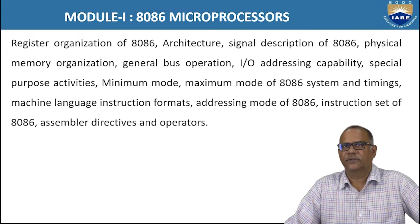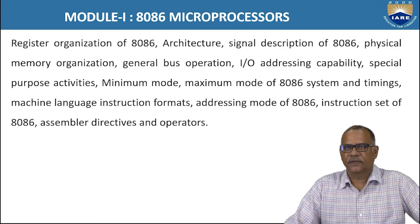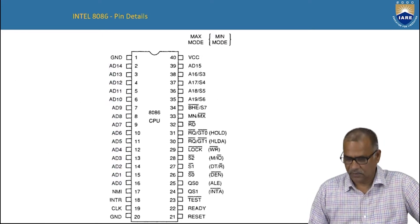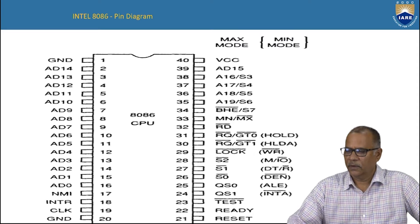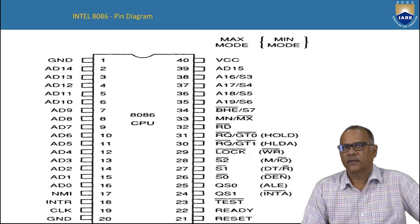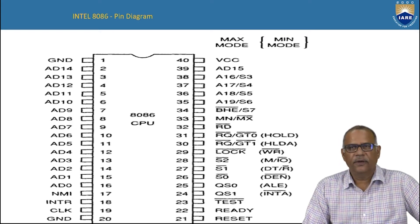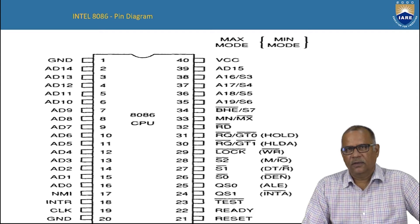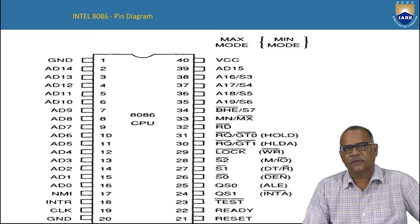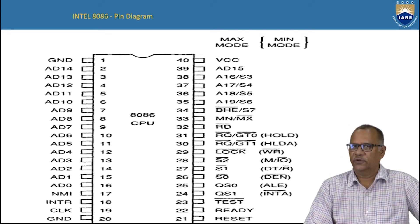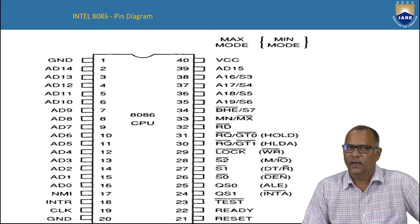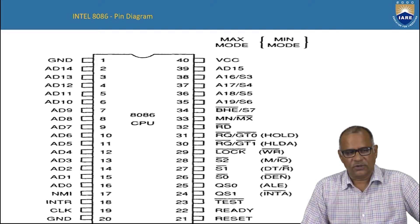In this session, I am going to discuss about the signal description of 8086. This is the pin diagram of the 8086 microprocessor. It contains 40 pins and it is available in a dual-in-line package. This 8086 microprocessor works in two modes: minimum mode and maximum mode. It can work as a simple microprocessor or it can work along with other coprocessors.